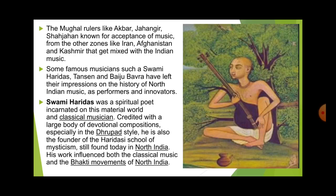Mughal rulers like Akbar, Jahangir, and Shah Jahan were known for the acceptance of music. Musicians from Iran, Afghanistan, and Kashmir started coming to the Mughal emperors and mixing their musical forms with Indian styles. This happened because these three rulers were known for their religious tolerance, which led them to accept music, painting, and other art forms.